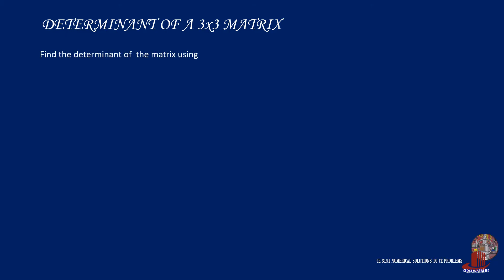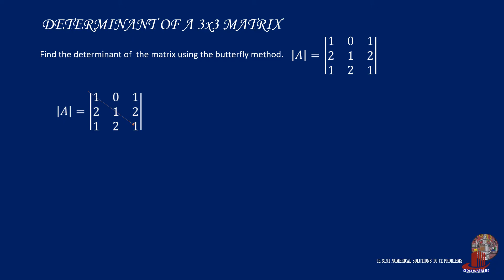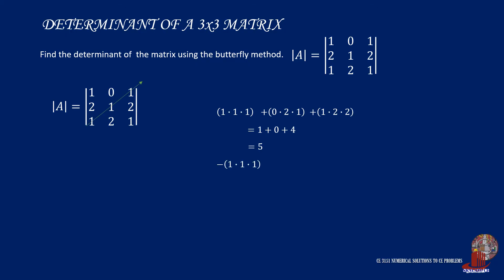Using the same matrix as before, find the determinant using the butterfly method. The positives are 1 times 1 times 1, plus 0 times 2 times 1, and 1 times 2 times 2, simplifying to 1 plus 0 plus 4, giving positive 5. The negatives are 1 times 1 times 1, 0 times 2 times 1, and 1 times 2 times 2, giving negative 1 minus 0 minus 4, which results in negative 5. Thus, matrix A is computed as 5 minus 5, or 0.